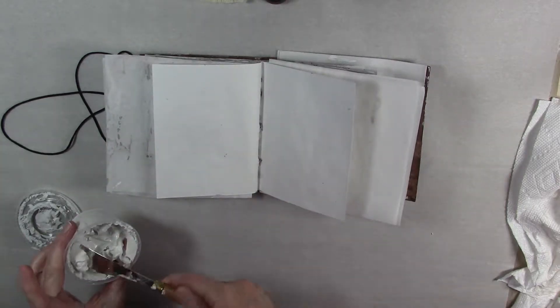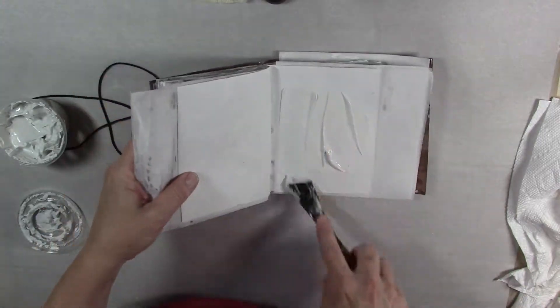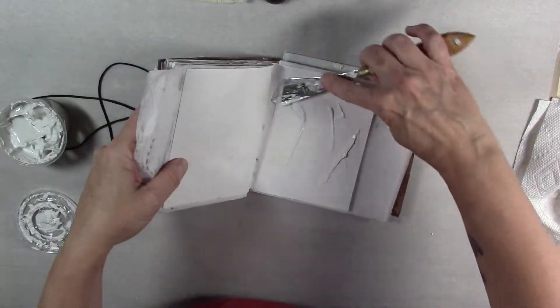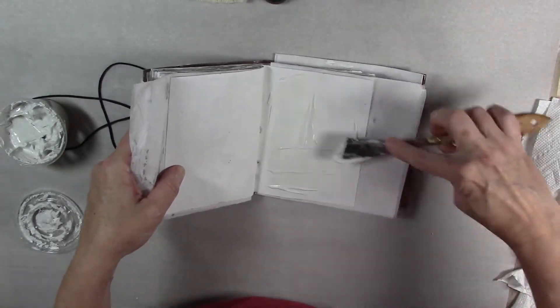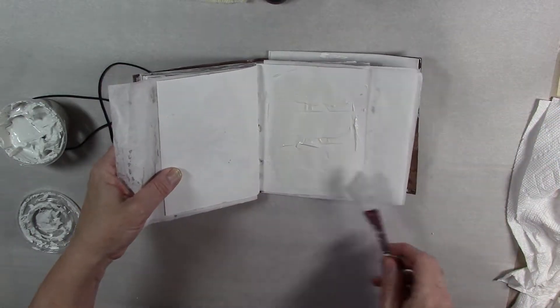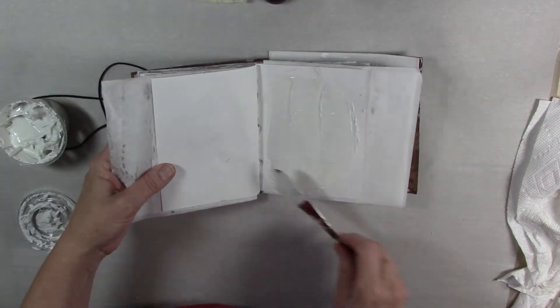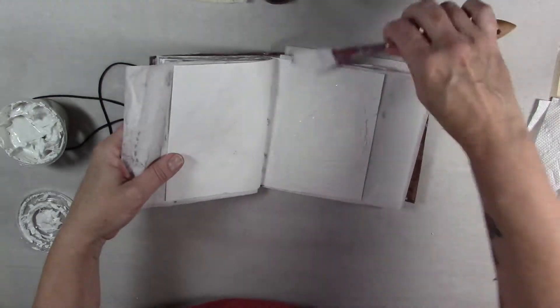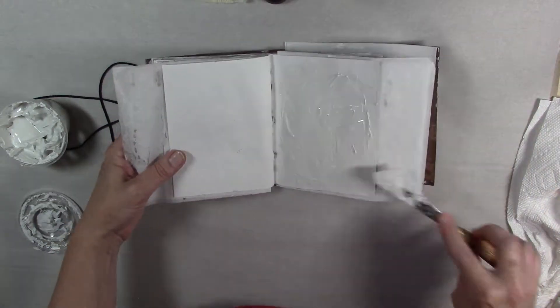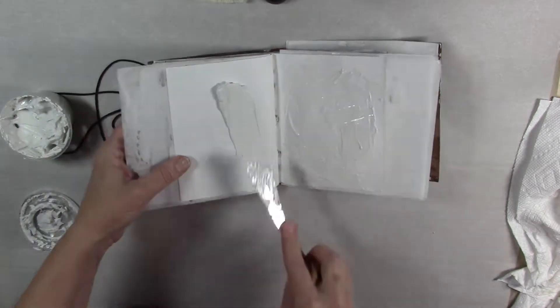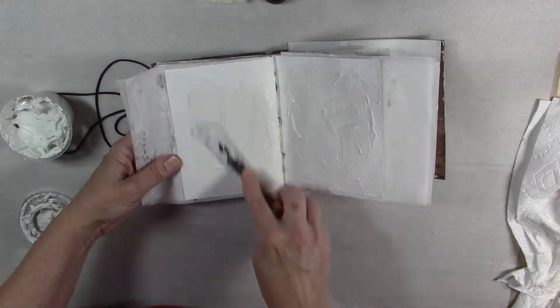I don't really cover the entire page and I do a somewhat thin layer. There are some sections that are a little bit thicker, but I just randomly apply it to both sides. You can see I'm just putting that on here. Let me do the other side and then I will set this to the side and let it dry completely.